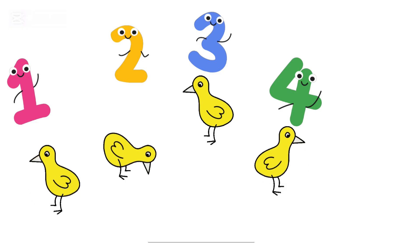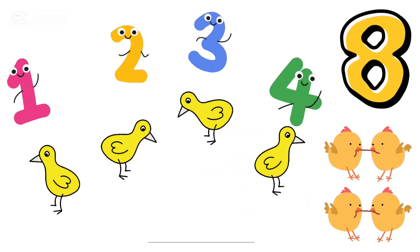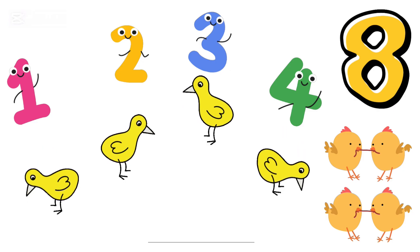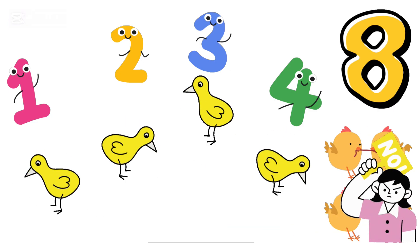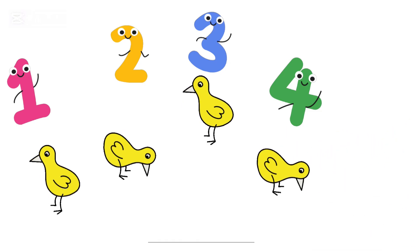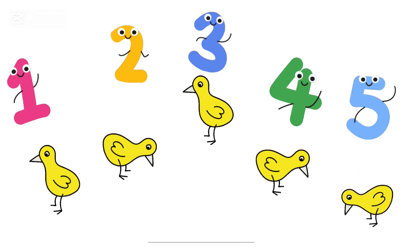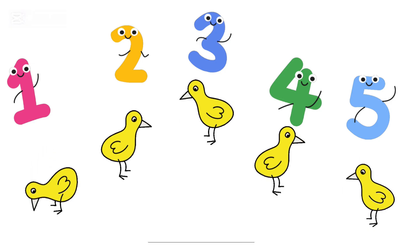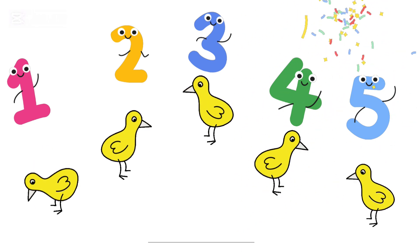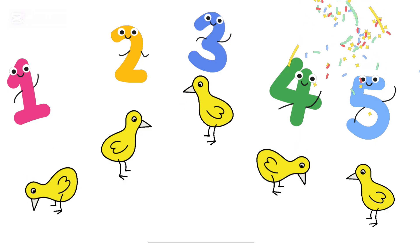Is it 8? 1, 2, 3, 4, 8? No, that's not right. Is it 5? 1, 2, 3, 4, 5? Yes! That's correct! 5 is the number that comes after 4.